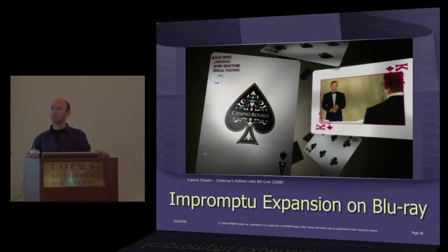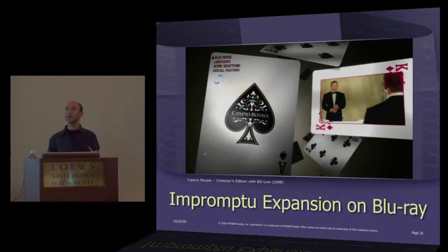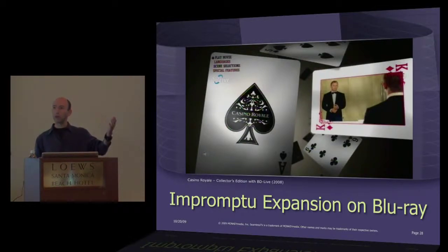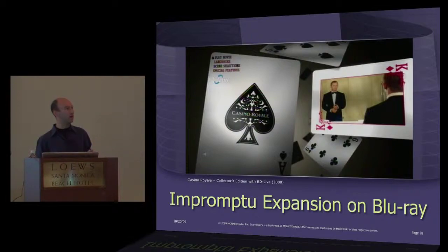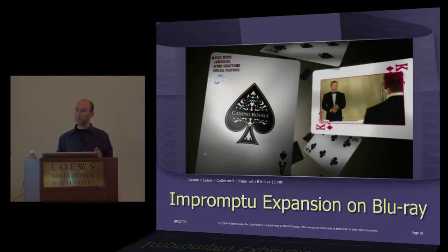There's another type of expansion that we call impromptu expansion, because it's not tied to any particular time in the video. At any time during the play of one piece of content, you can jump out and come back again — and it doesn't even have to be related to the core piece. They can be totally unrelated pieces of content. So we're going to take a look at an example from Casino Royale and expand out to an impromptu expansion.